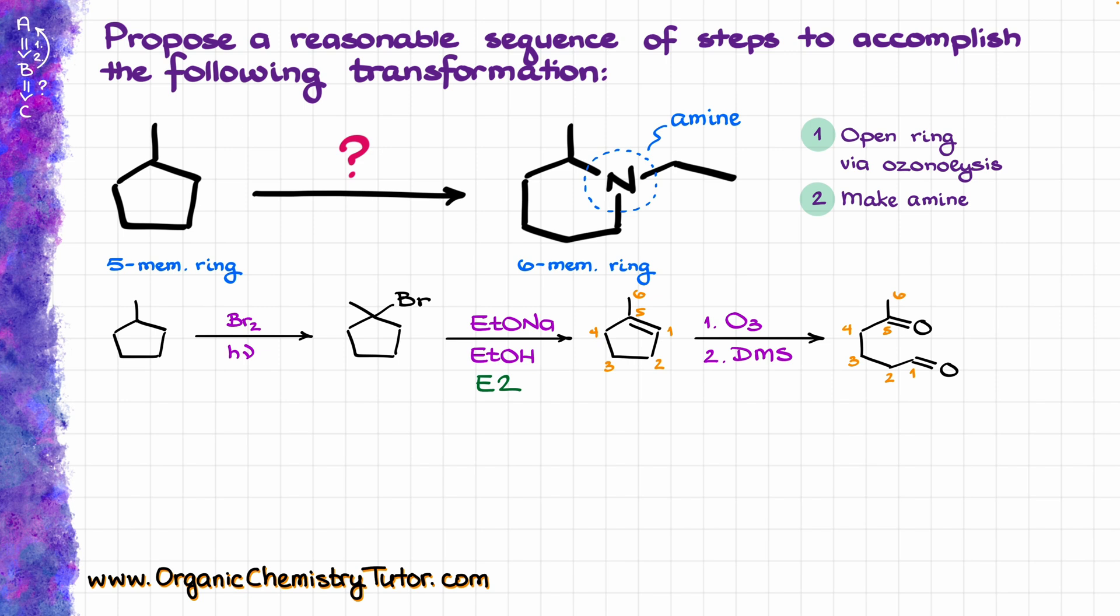And notice, we are using the reductive ozonolysis using dimethyl sulfide in the second step to make sure that we end up with an aldehyde over here and not a carboxylic acid. And that part is fairly relevant to us, because we now want to close up our ring making an amine while we are at it, so we got to do a reductive amination, which has to work with the ketones and aldehydes. That reaction does not work with the carboxylic acids.